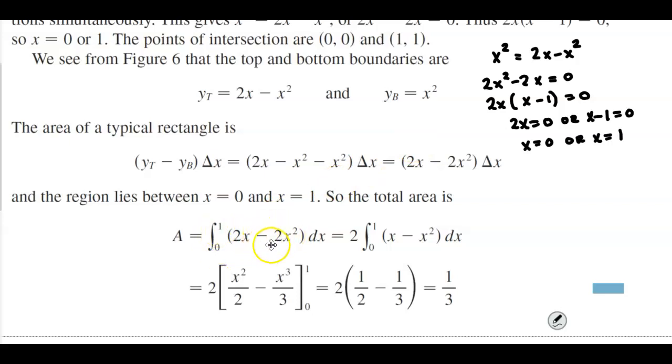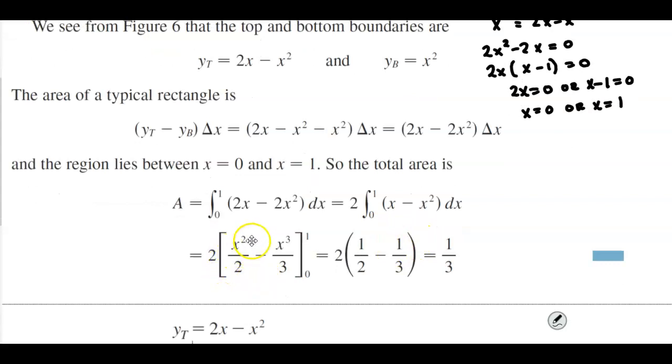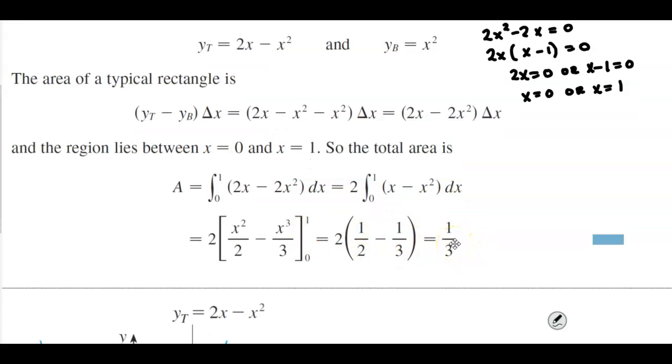Then we can integrate more easily. We get 2 times x squared over 2 minus x cubed over 3, with a lower limit of zero and an upper limit of one. Evaluating those upper and lower limits gives us an area of one third.